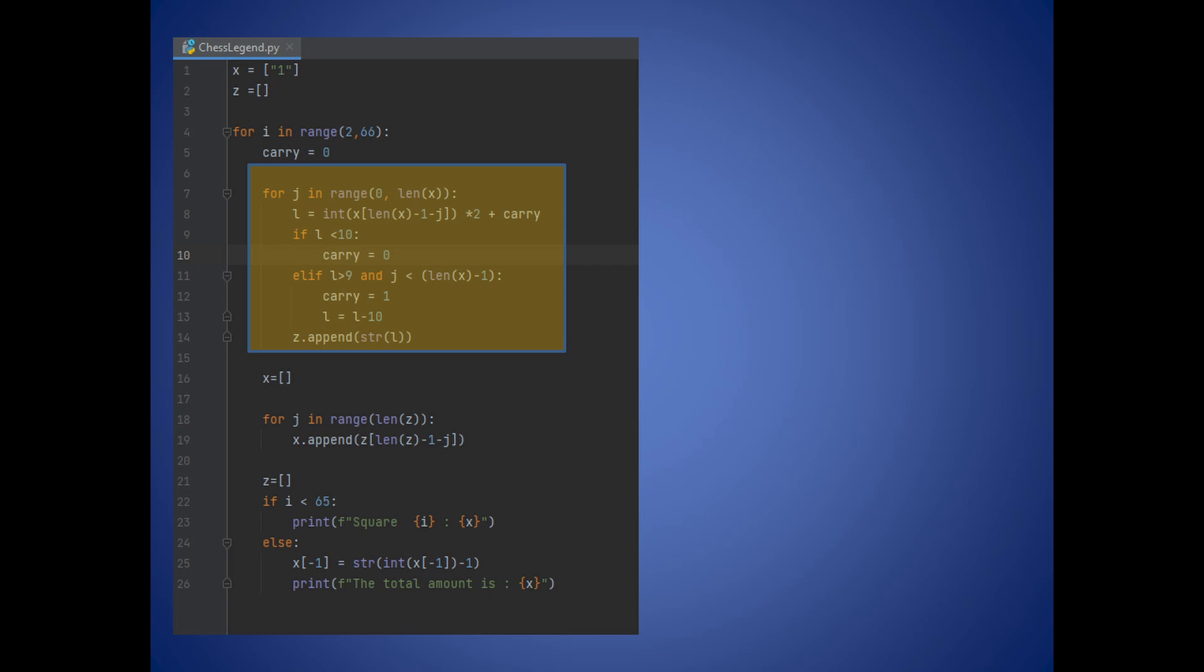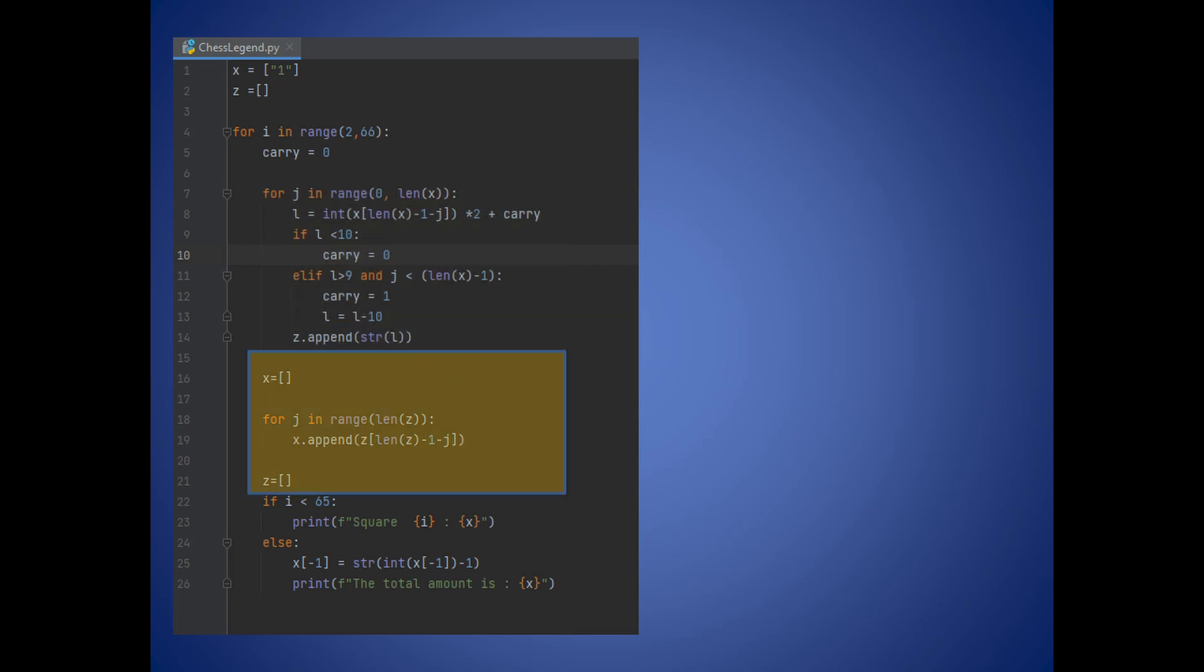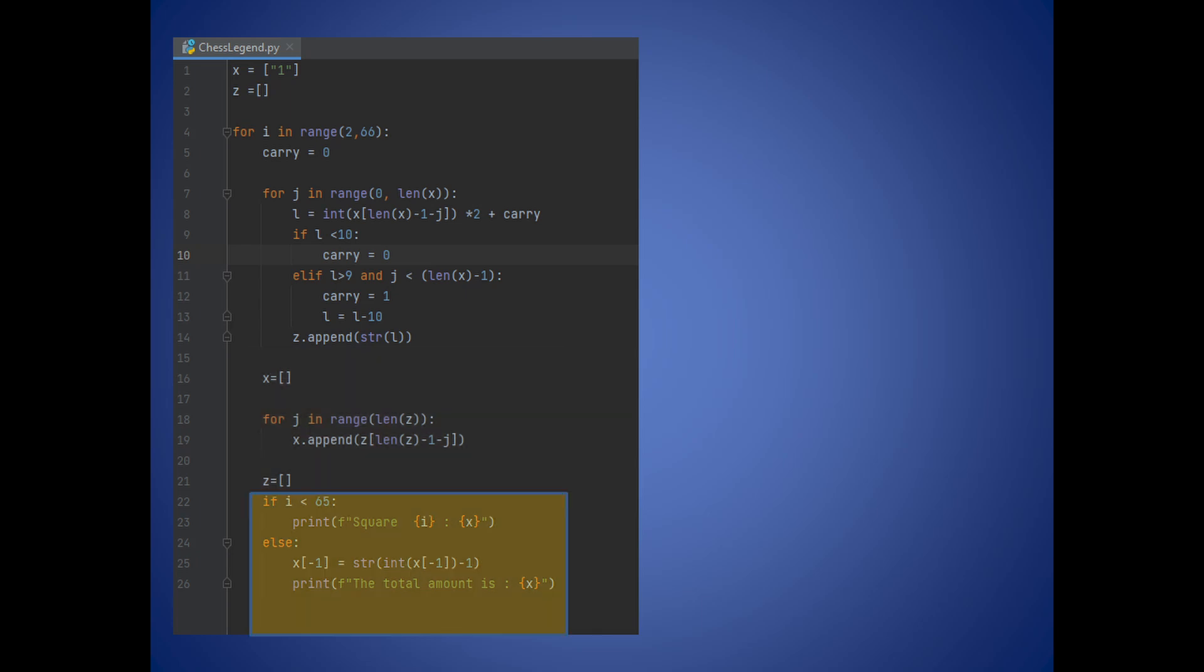Checking if the multiplication exceeds 9, we can make the correct choice. Finally we append each calculation in the z list. Set the x list to an empty list and we run a new loop to turn the numbers into the correct order. After the for loop, turn z list to an empty list for the next iteration. Finally print our calculation.